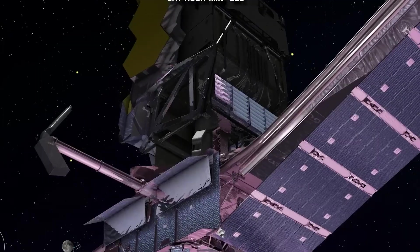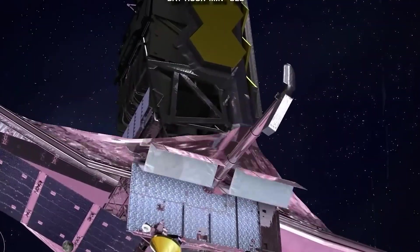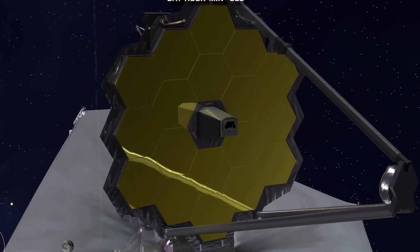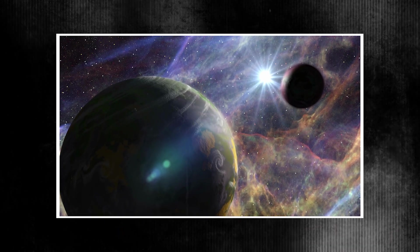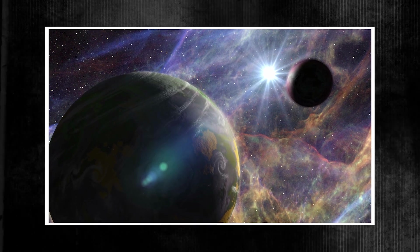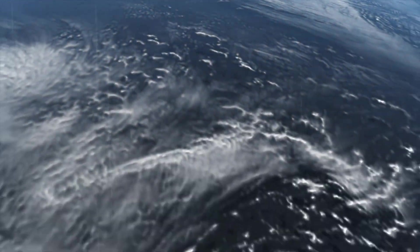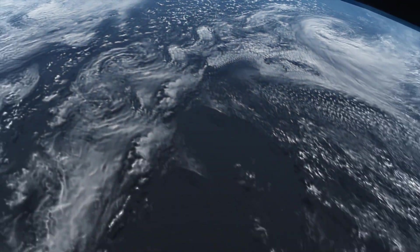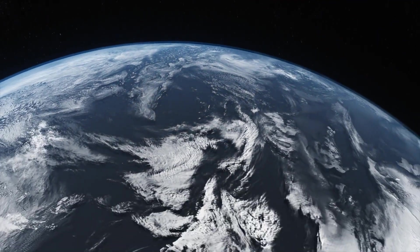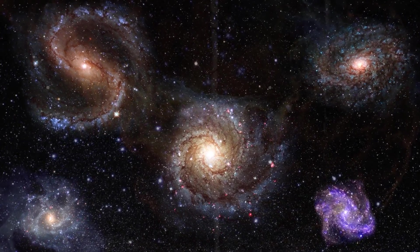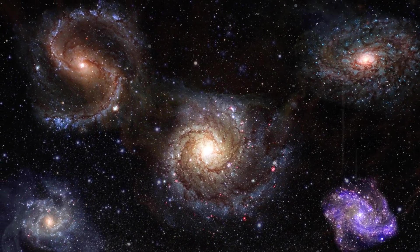The James Webb Space Telescope has already unveiled groundbreaking discoveries that are transforming our understanding of the universe. It has detected key chemical markers in the atmospheres of distant exoplanets, including water and carbon-based compounds, offering tantalizing hints about the potential for life beyond Earth. It has also provided stunning clarity of ancient galaxies, revealing their structure and composition from a time when the universe was only a few hundred million years old.